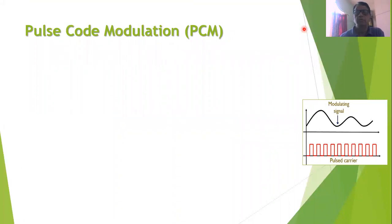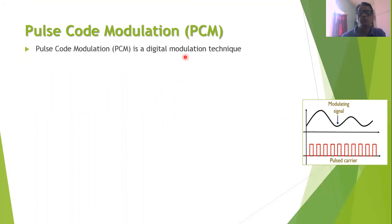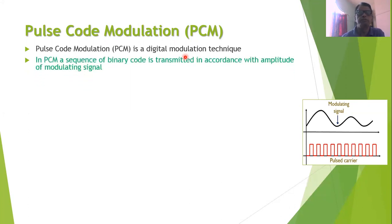Let us start the session with the question: what do we mean by pulse code modulation? In pulse modulation, the modulating signal is a continuous signal and the carrier signal is in the form of square pulses. Pulse code modulation is a digital modulation technique. Earlier techniques such as PAM, PWM and PPM are analog modulation techniques, but pulse code modulation is a digital modulation technique. In pulse code modulation, a sequence of binary code is transmitted in accordance with the amplitude of the modulating signal.